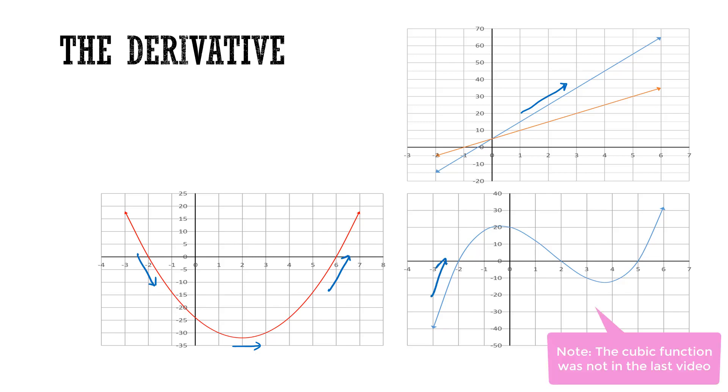This cubic went from positive to zero to negative to zero to positive. But really, when we're looking at any nonlinear function, the slope is constantly changing.